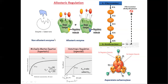Non-allosteric enzymes follow Michaelis-Menten kinetic parameters and produce a hyperbolic plot, whereas allosteric enzymes do not follow Michaelis-Menten kinetics and produce a sigmoidal plot. The regulatory molecules present in allosteric enzymes bind with the allosteric enzyme by reversible non-covalent bonds.